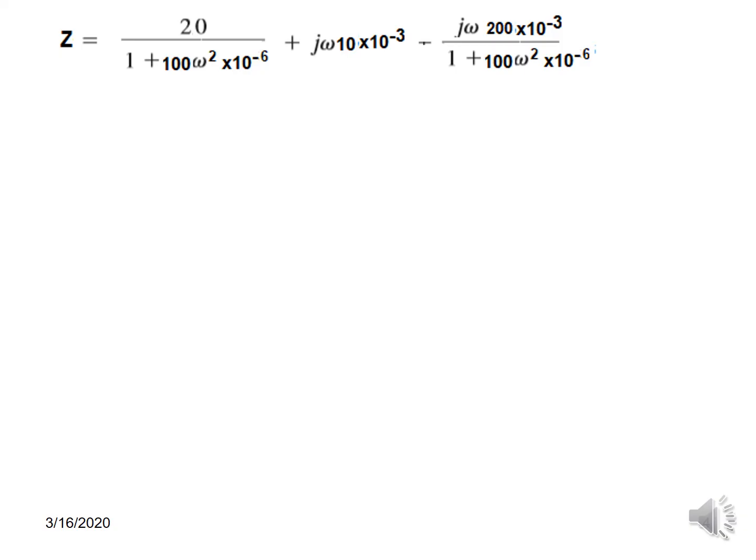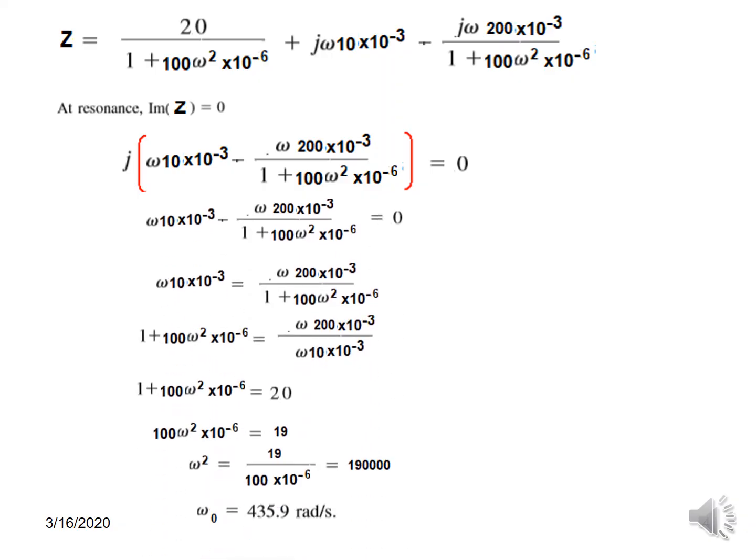We take the j terms on one side and take j common from here. This becomes the terms, and it has to be equal to zero. At resonance, imaginary Z has to be equal to zero, so this term becomes zero.